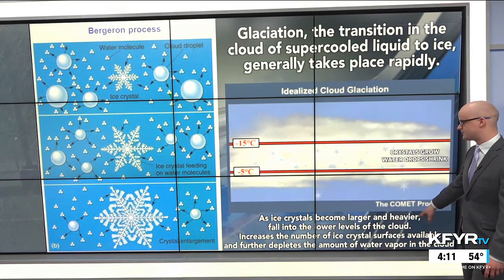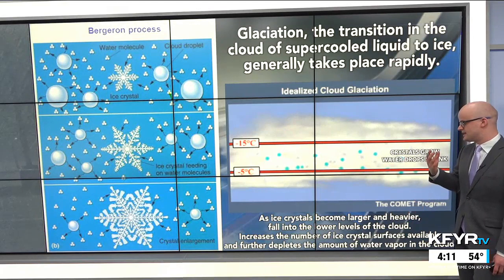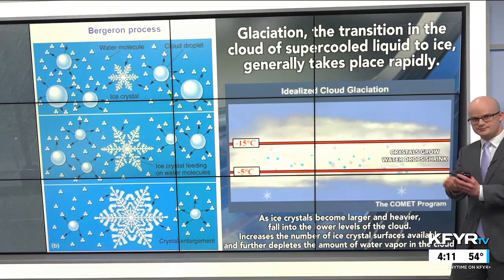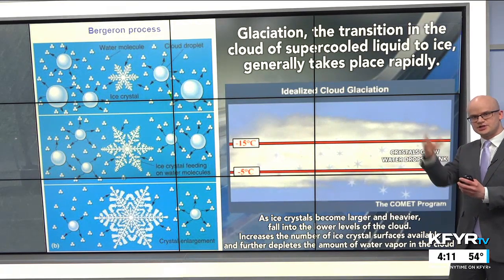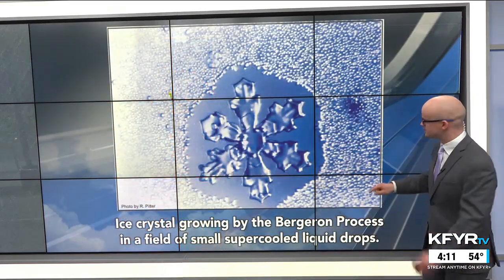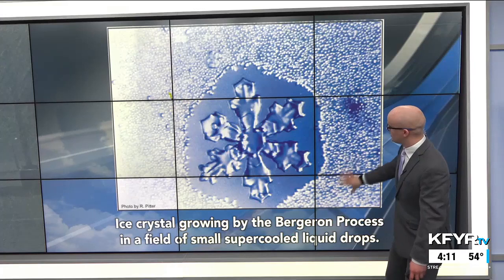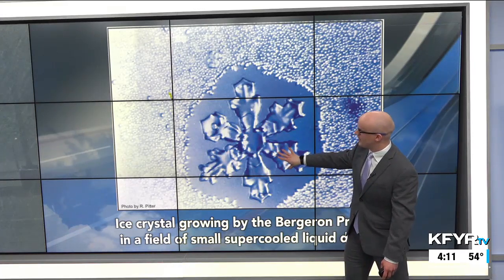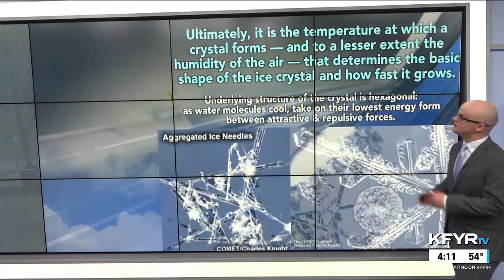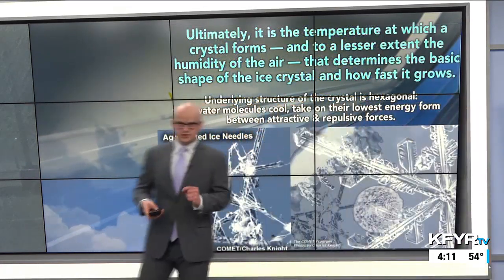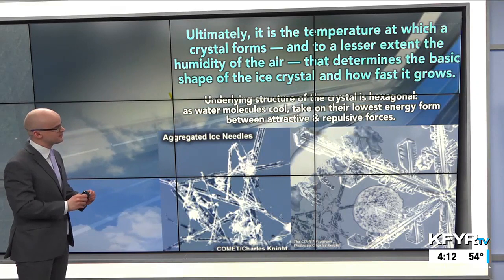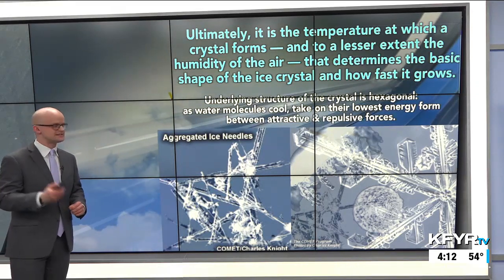As the ice crystals become larger and heavier, they fall into the lower levels of the clouds. That increases the number of ice crystal surfaces available, so more water droplets can attach to those ice crystals. You get more deposition to occur as well, and the amount of water vapor decreases. Ultimately, it's the temperature and, to a lesser extent, the humidity of the air at that cloud level that determines the basic shape of the ice crystal and how fast that snowflake grows.